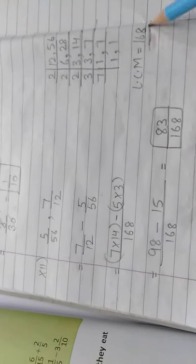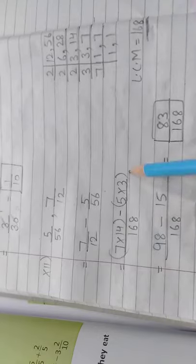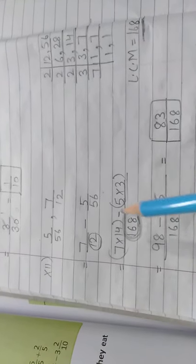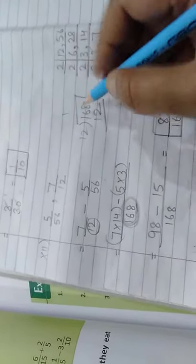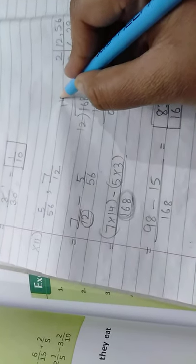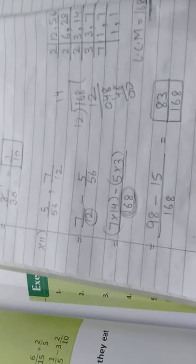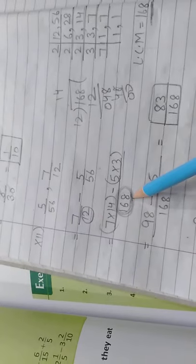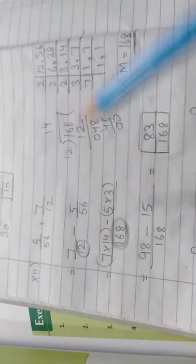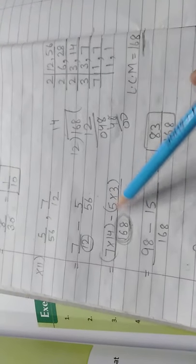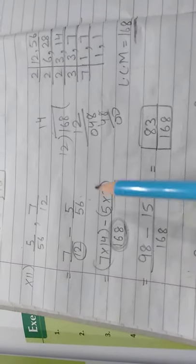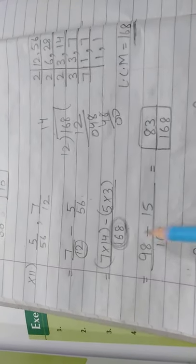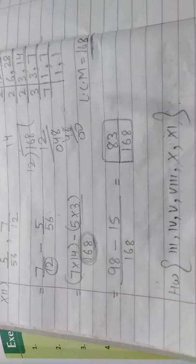The common denominator is 168. For 7/12: 168 divided by 12 is 14, so numerator = 7 × 14 = 98. For 5/56: 168 divided by 56 is 3, so numerator = 5 × 3 = 15. We subtract: 98 minus 15 = 83. The final answer is 83/168.